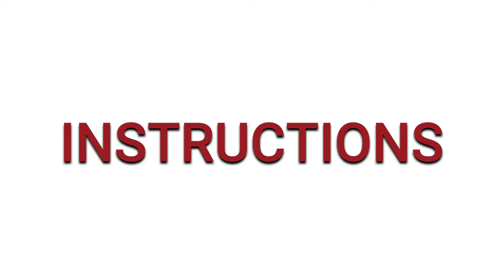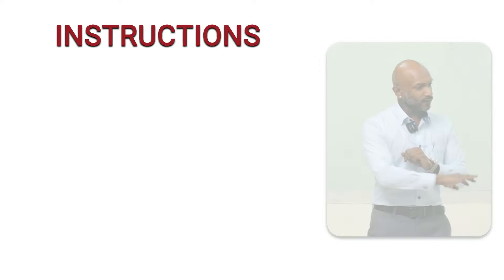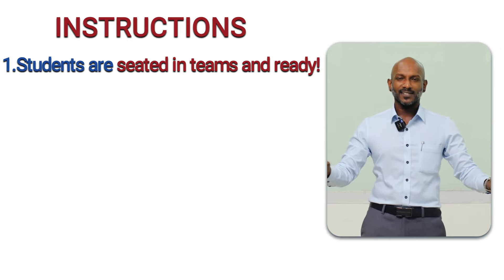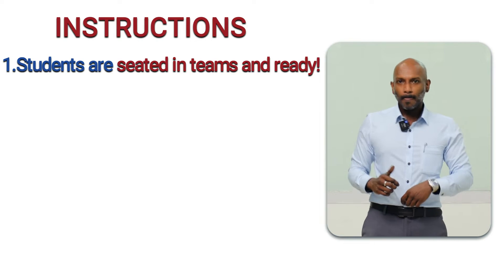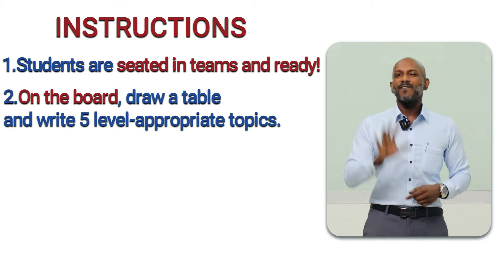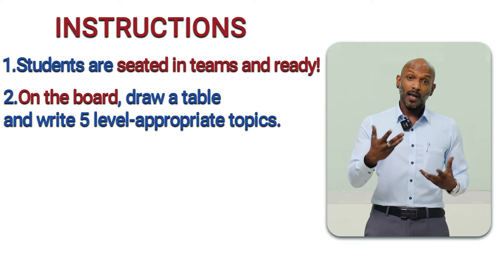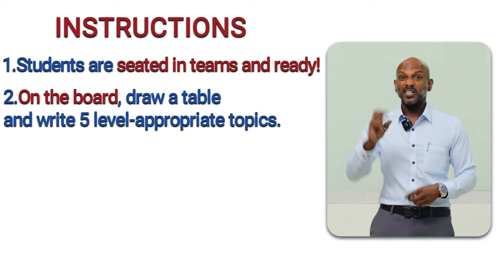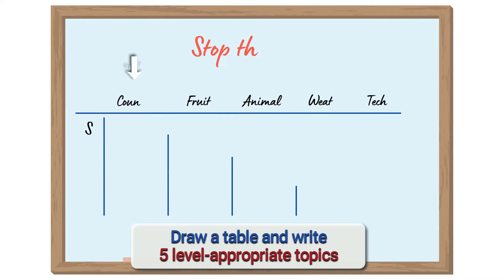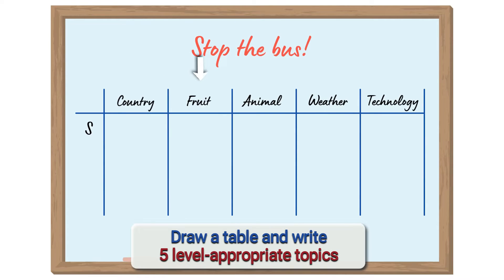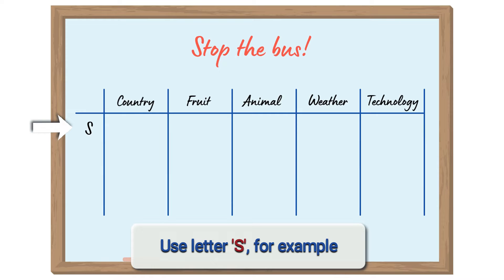Here are the instructions for Stop the Bus. First of all, you've got all your learners sitting down relaxed and ready to begin. Up on the board, write five level-appropriate topics. For example, if we have pre-intermediate, perhaps: country, fruit, animal, weather, technology. Then, next to that, write the letter S.